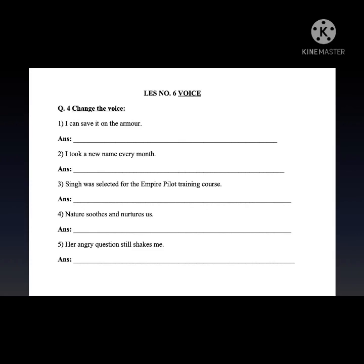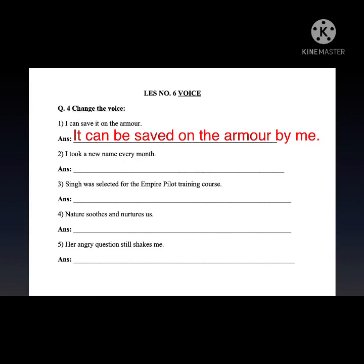'I can save it on the armor.' Here 'I' is the subject, 'can save' is the verb, 'it' is the object, and 'on the armor' is extra. In passive voice, we bring the object first: 'it,' change the verb to V3: 'can be saved,' add the extra phrase, then 'by' plus the subject. When 'I' moves to that position, it becomes 'me.' Answer: 'It can be saved on the armor by me.'